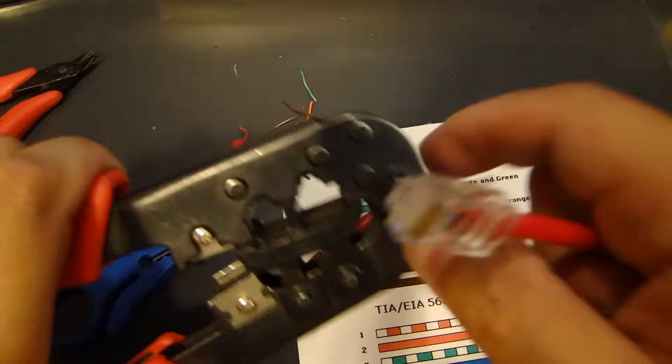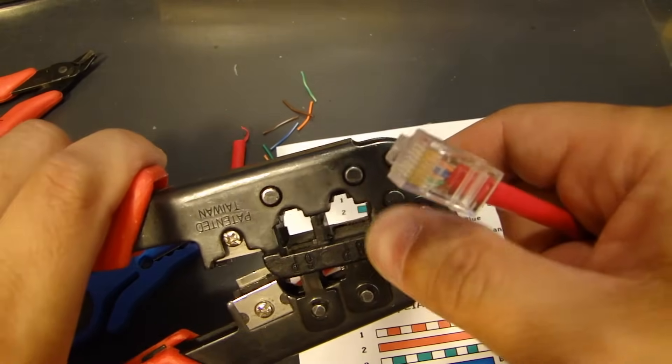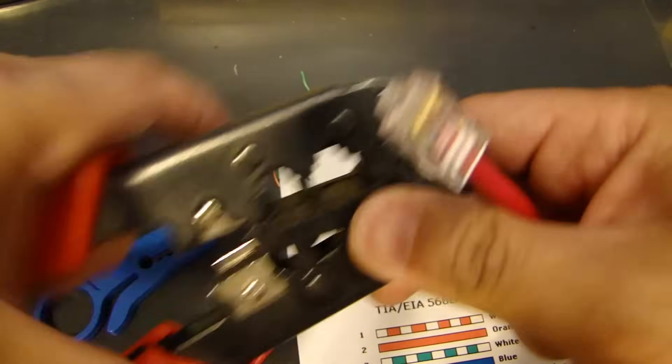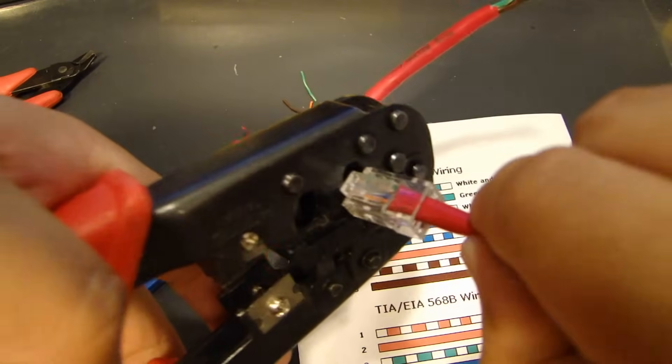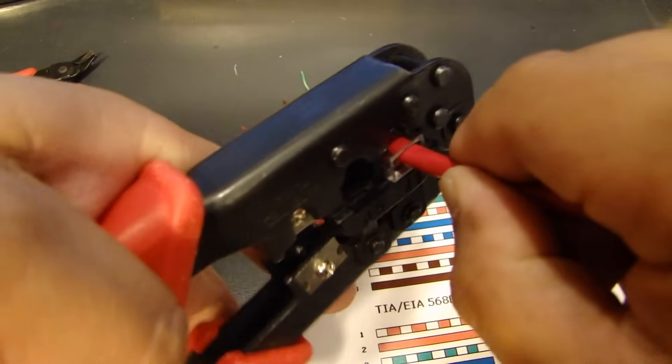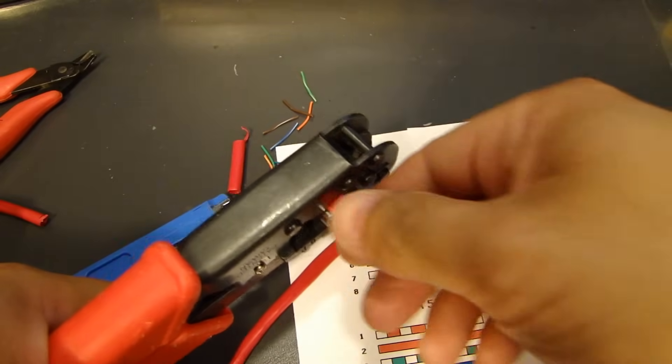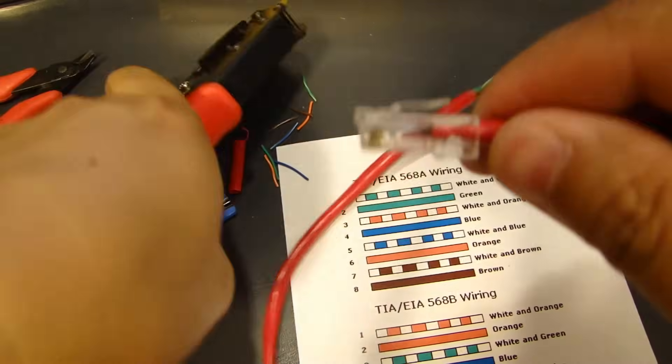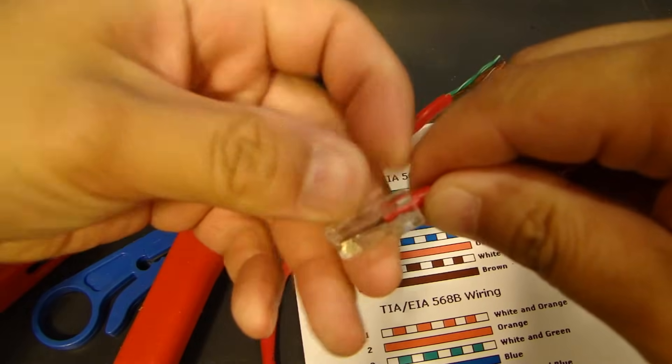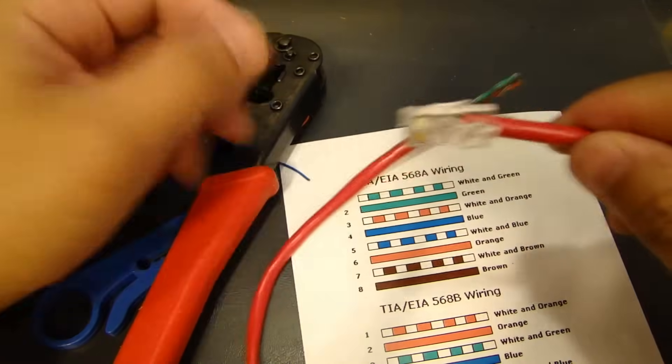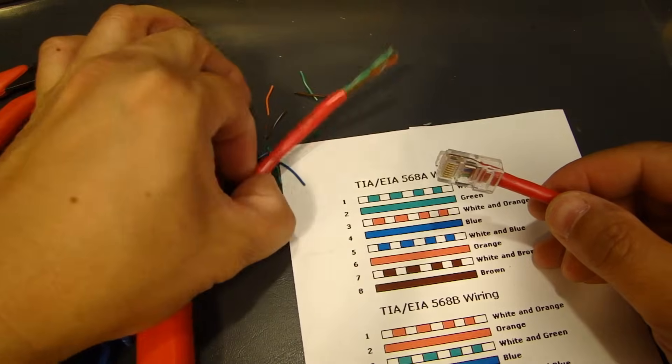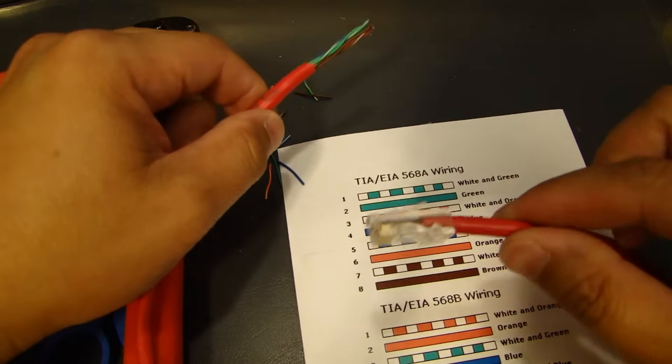Push it in. Make sure everything's all seated properly. And then, look for the eight pin crimper here. Put this in here. And now, just give it a squeeze. Nice, tight squeeze here. And this side is done. So, this is the 568A pinout that I just did on this end.